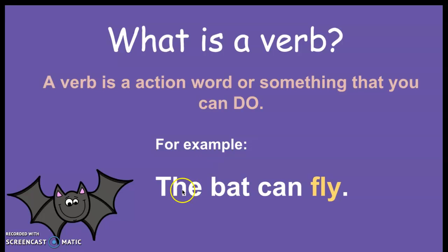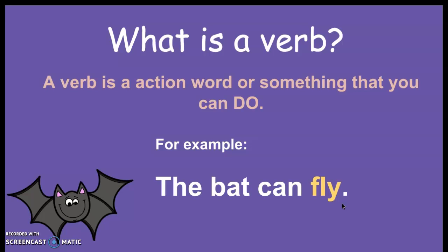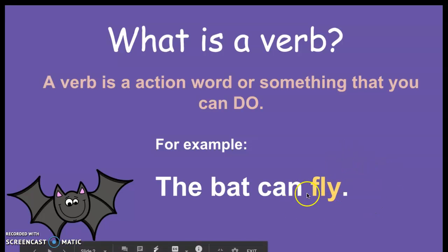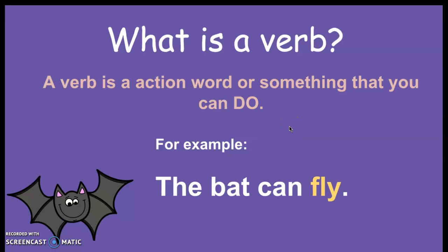So for example, I have a sentence that says: the bat can fly. What is the action in my sentence? The bat can fly. That's right — the word fly is the action. It is the verb in my sentence.